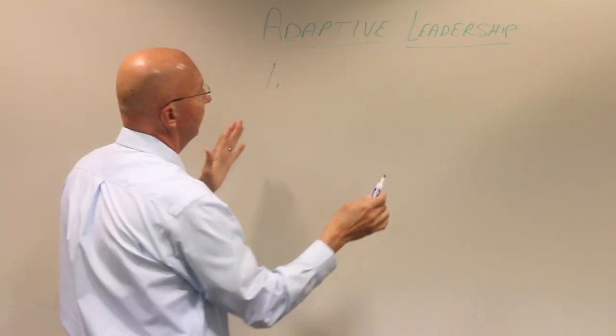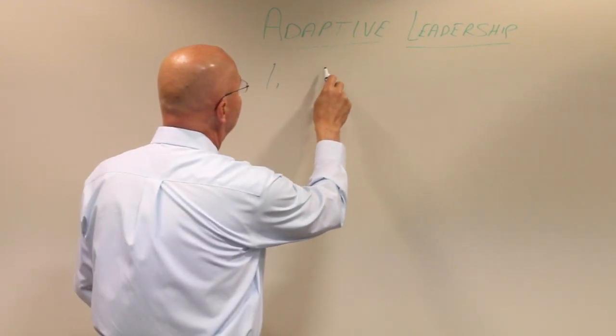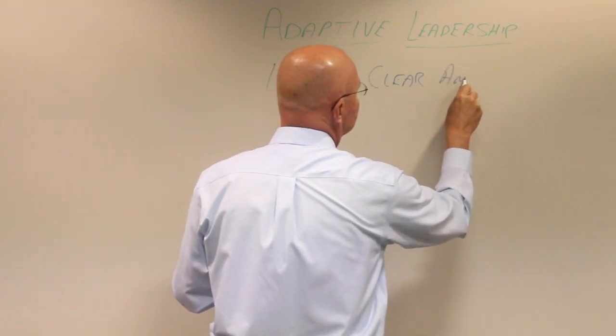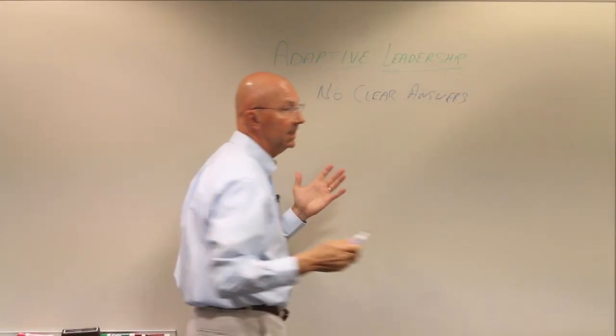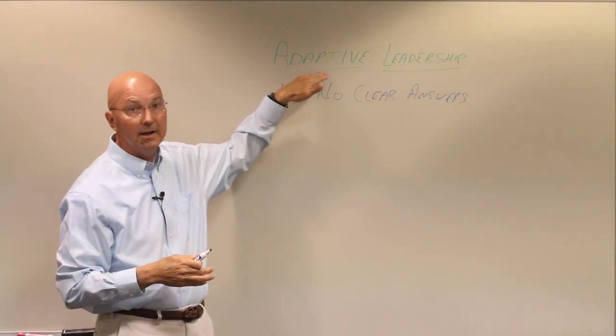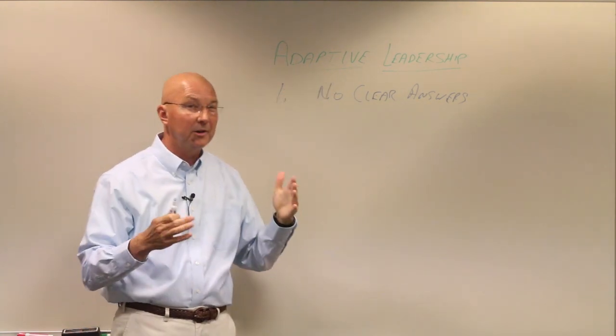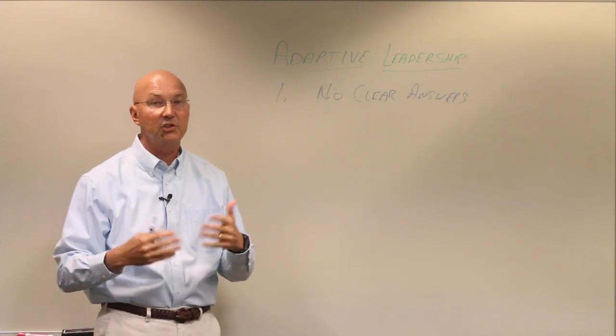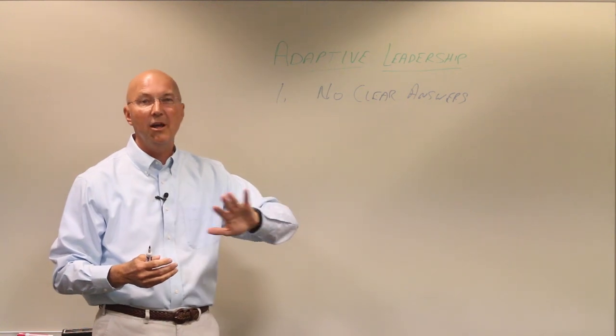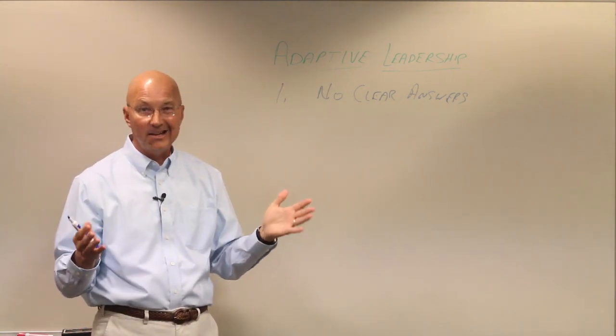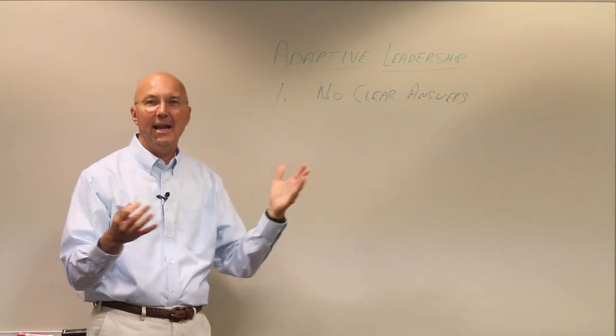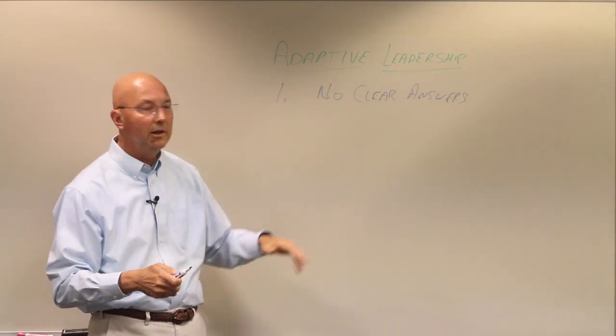Number one is we find ourselves in a spot where there are no clear answers. We're facing a dilemma, a challenge that we have not faced before. There are no clear answers. That would be different than technical leadership or technical problems where there is a solution. There's someone who knows the answer. I might not know it, but I can go somewhere and find out what is the answer to this problem, and it's good to know technical answers and that kind of leadership is important. But adaptive leadership, we're in a spot, a highly changing environment and there are no clear answers.